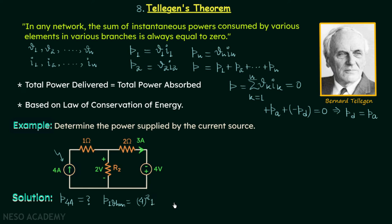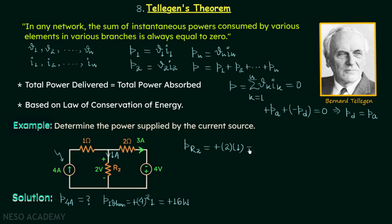Element number two is the one-ohm resistor. The power absorbed by it equals I²R = 4² × 1 = plus 16 watts (positive because absorbed power is positive). Moving on to the third element, R2: applying KCL at the node, the current in that branch is one ampere, so the power absorbed by R2 equals voltage times current, giving plus 2 watts.